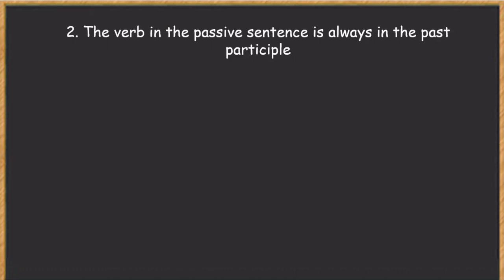The second thing to keep in mind is that the verb in the passive sentence is always in the past participle. With most regular verbs you can add 'ed' to make the past participle — for example, 'open' becomes 'opened.' But this is not always the case. 'Chain' becomes 'chained,' but 'break' cannot take 'ed' — the past participle is 'broken,' not 'breaked.' There are irregular verbs, and you have to be careful not to just add 'ed' and assume you have the past participle.